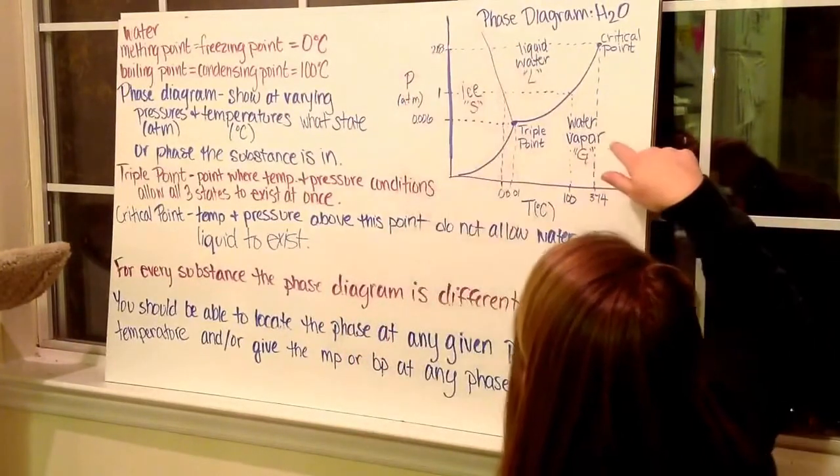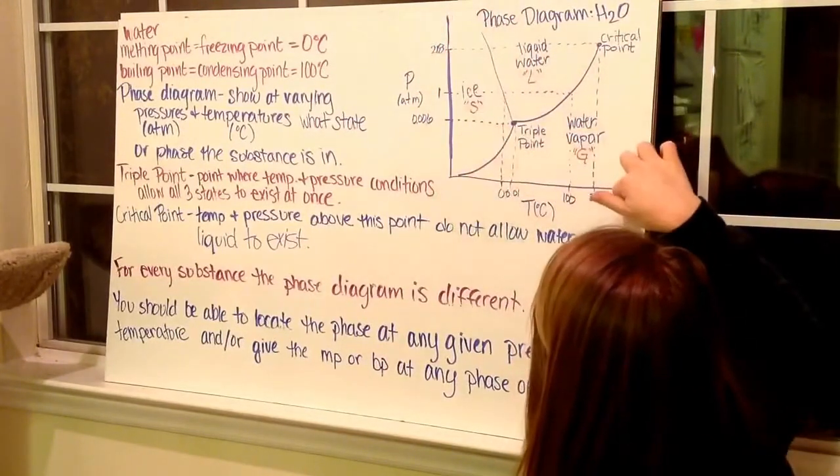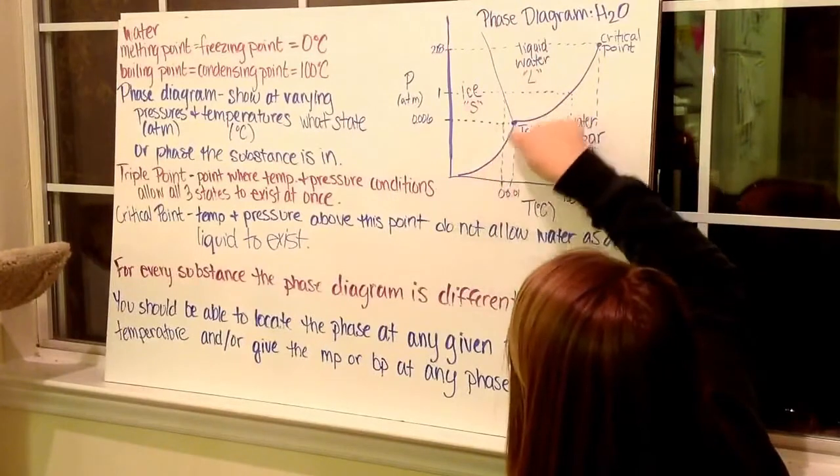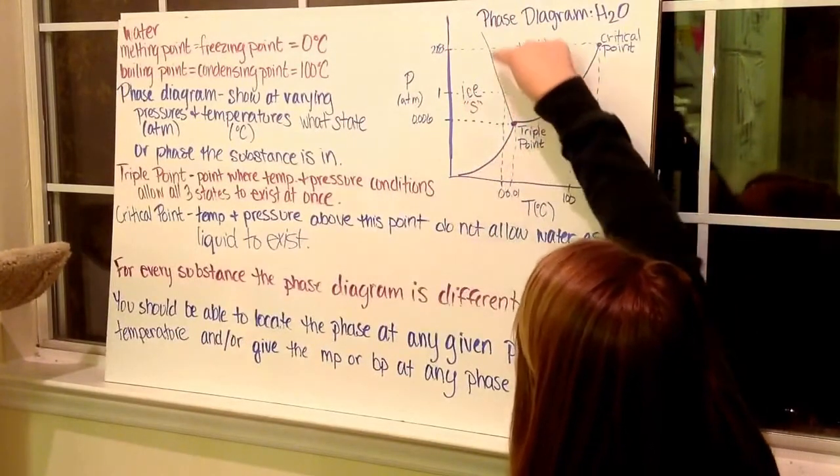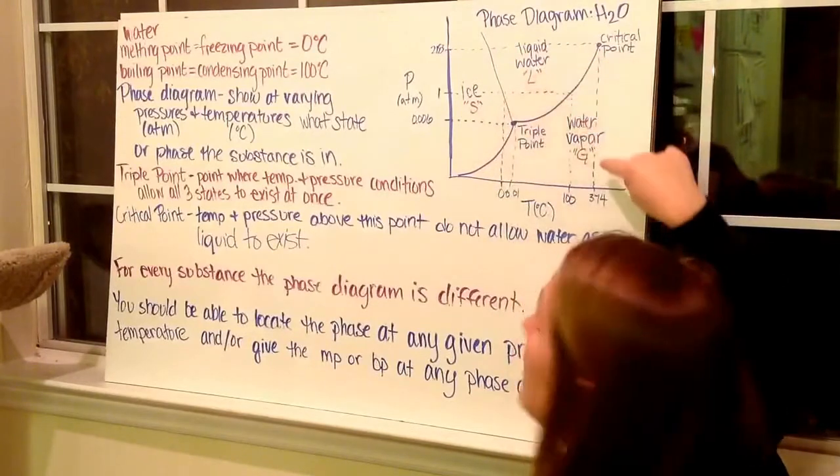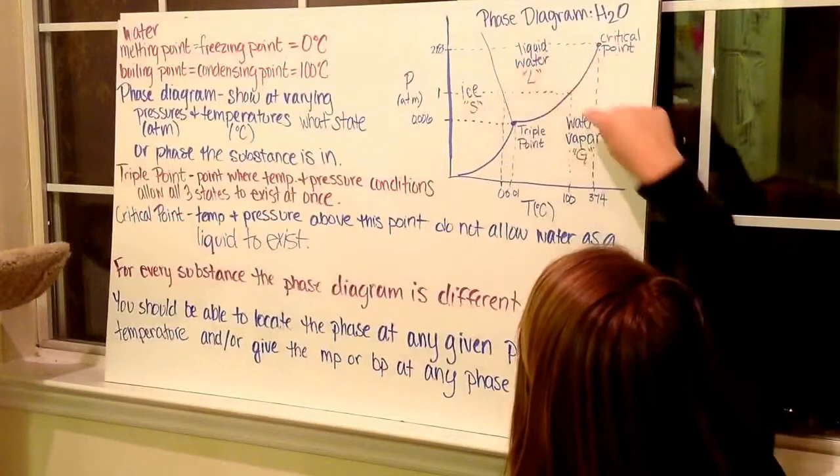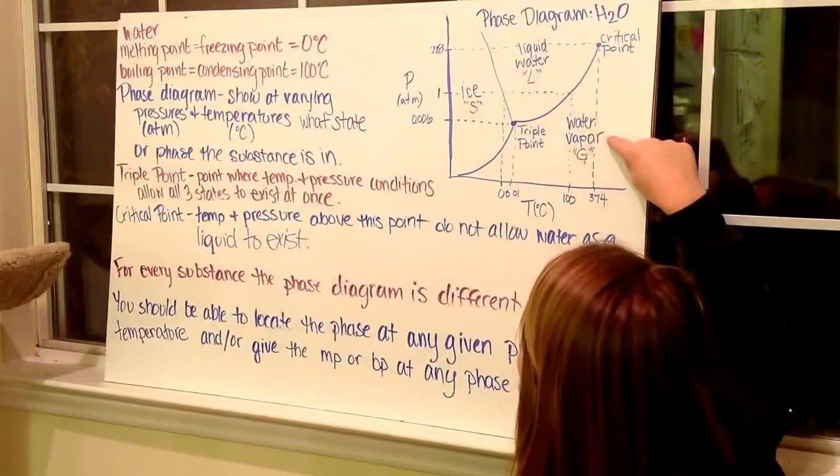This is a phase diagram. It's a phase diagram of water. Notice that the axes are pressure and temperature. We draw our lines up along these lines. Both phases exist at an equilibrium. We have the solid phase, the liquid phase, and the gas phase. Known for water as ice, liquid water, and water vapor or steam.